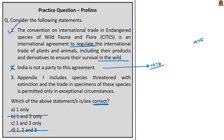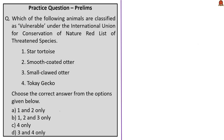The third statement: Appendix I includes species threatened with extinction, and trade in specimens of these species is permitted only in exceptional circumstances — correct. The first and third statements are correct, so the answer is option C.